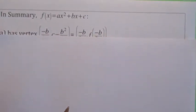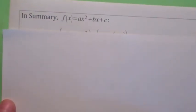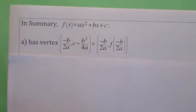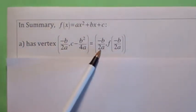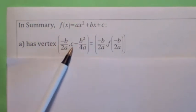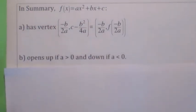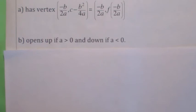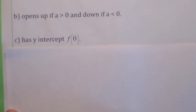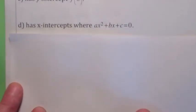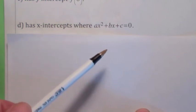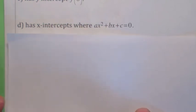In summary, when you have a quadratic function, the vertex x-coordinate is found by computing −b over 2a. The y-coordinate can be computed as c − b²/4a, or you can plug the x-coordinate into the function. It opens up if a > 0, opens down if a < 0 — that's your vertical stretch and possible reflection across the x-axis. Quadratic functions always have a y-intercept since the domain is all real numbers, so the y-intercept is f(0). It may or may not have x-intercepts; using the quadratic formula and getting non-real roots indicates no x-intercepts.